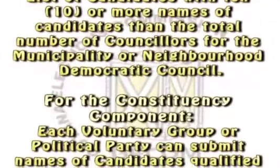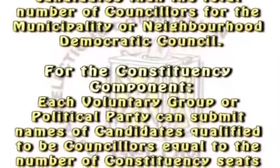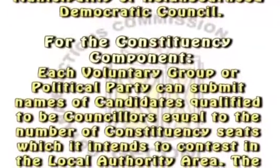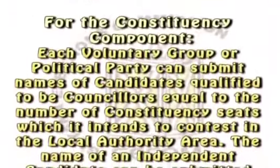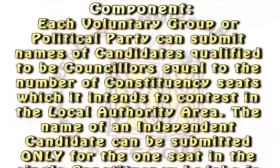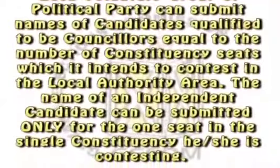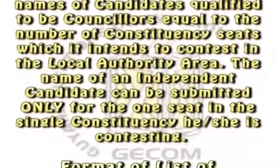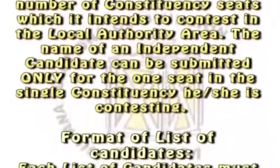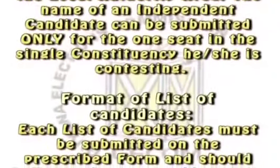For the constituency component, each voluntary group or political party can submit names of candidates qualified to be councillors, equal to the number of constituency seats which it intends to contest in the local authority area. The name of an independent candidate can be submitted only for the one seat in the single constituency he or she is contesting.